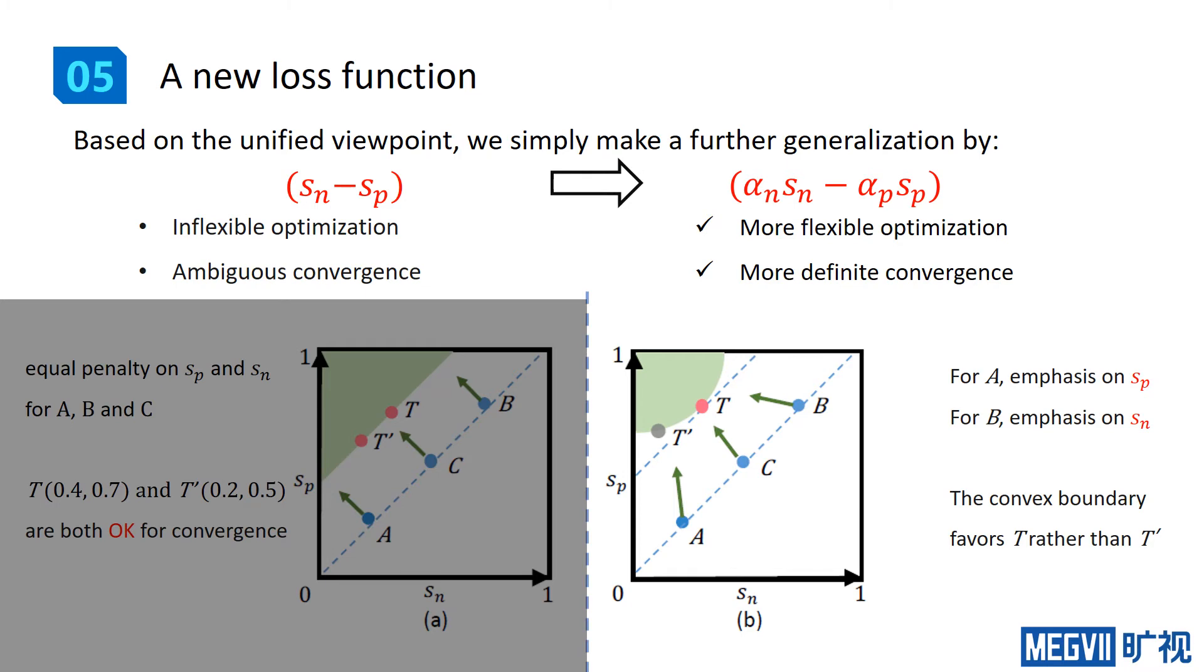Moreover, it typically has a convex convergence boundary. Such a boundary favors the specified convergence. Given the detailed formula, we will find that the boundary is actually circular, so we name it as the Circle Loss.